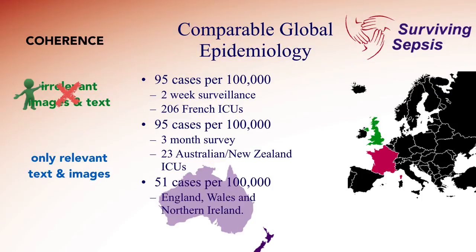Now we talk about relevant images. In this one, I actually replaced the image of the globe with one of the countries highlighted that we're talking about. So you can see here France, England, and Australia.